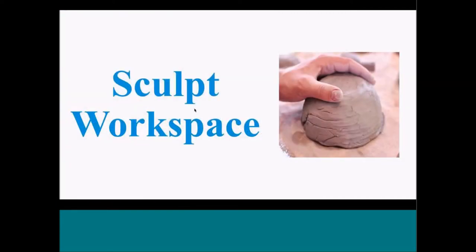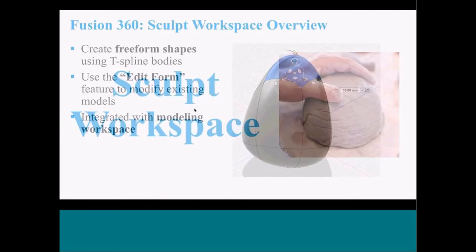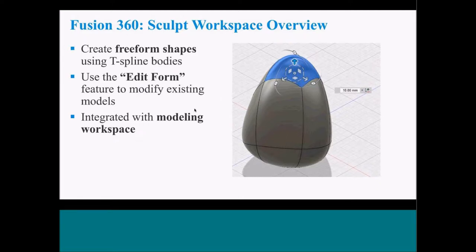We're going to start by talking about the sculpt workspace, which essentially allows you to work with a solid model in the same way that you might work with a piece of clay with your hands. More specifically, it does so by allowing you to create freeform shapes using T-spline bodies or T-spline entities, which essentially divides a model into a series of splines and subcomponents that you can then translate, rotate, and reform by clicking and dragging. Additionally, you can use the edit form functionality to modify existing models, and go back and forth between a more typical modeling workspace and this sculpt workspace very seamlessly.